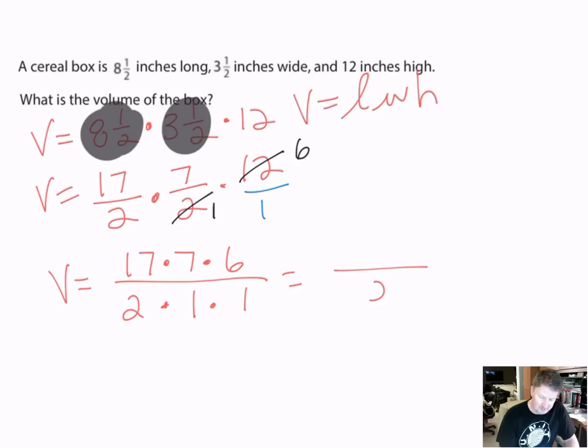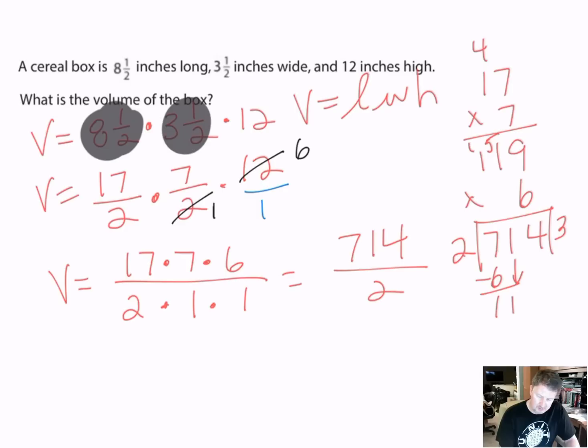But 17 times 7, I don't really know what that is. 17 times 7. 7 times 7 is 49. 7 times 1 is 7, plus 4 is 11. And then I want to multiply that times 6. 6 times 9 is 54. 6 times 1 is 6, plus 5 is 11. 6 times 1 is 6, plus 1 is 7. So, that's 714 over 2. So, I want to divide that by 2. 2 will go into 7, 3 times. That would be 6. I subtract. I get a 1. Bring that 1 down. 2 will go into 11, 5 times. That gives me a 1 left over. And then I have 14. But 2 will go into 14, 7 times. So, my final answer is 357.